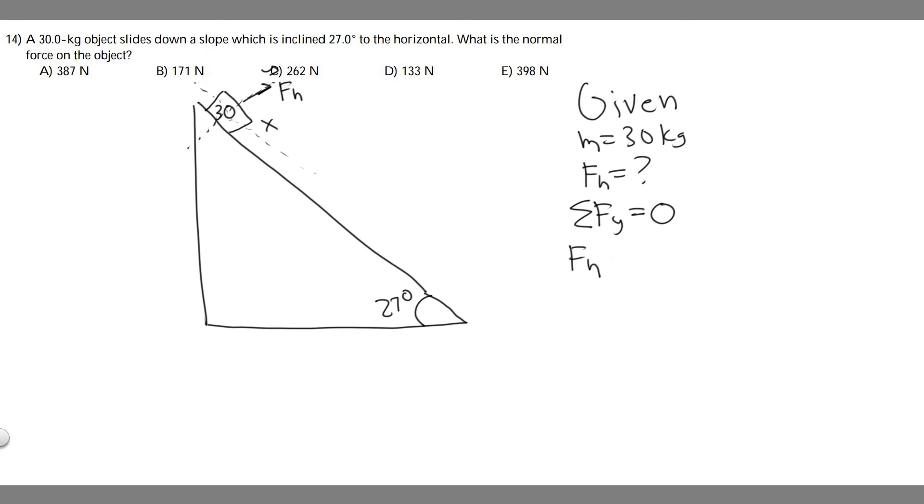We have F sub n and then we also have another force going this way, and this is gonna be the force due to gravity. Keep in mind since this is angled like this, the force due to gravity is gonna be equal to mg times the cosine of theta.